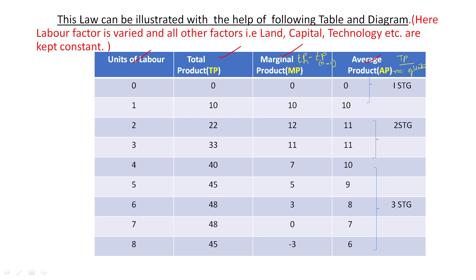Looking at the first unit of labor — when zero input of labor is there, obviously there will be no total output, no marginal product, and no average output. If we start increasing production by introducing one unit of labor, the total production will be 10 units, marginal product will be 10, and average product will also be 10.